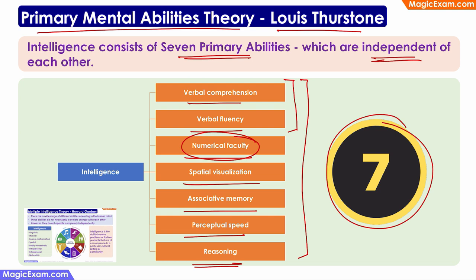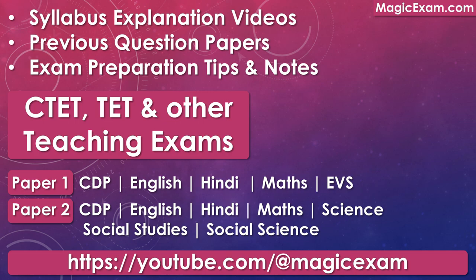And if you look at it, Thurston's theory seems to be the inspiration for Howard Gardner's multiple intelligence theory as well, because he also talks about various types of intelligence. We will study about Howard Gardner's theory a little later in this video. So, moving on.